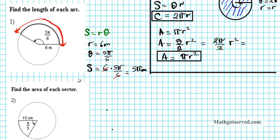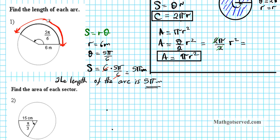The length of the arc is five pi meters. Geometrically, that means the distance from this point to this point on the extremity right here is going to be five pi meters long. That's how you calculate the arc length.